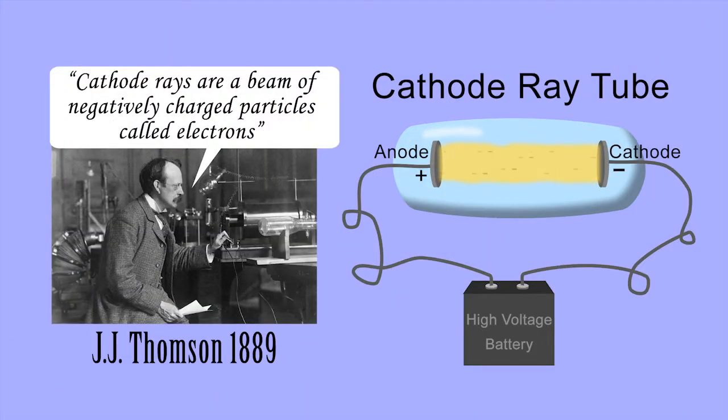In 1889, J.J. Thompson discovered the electron, a particle with a negative electric charge.